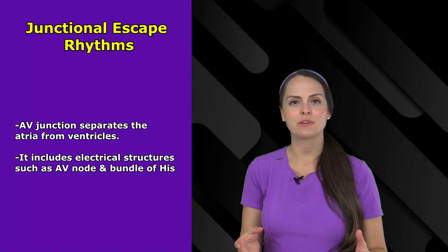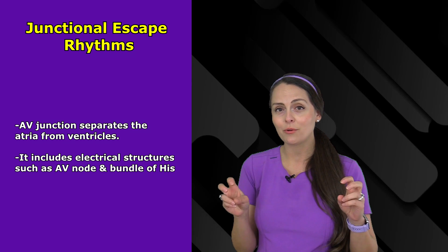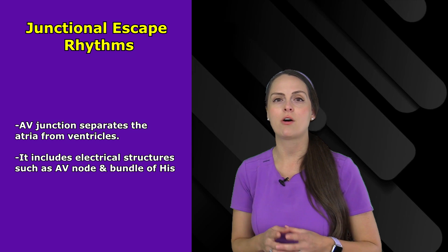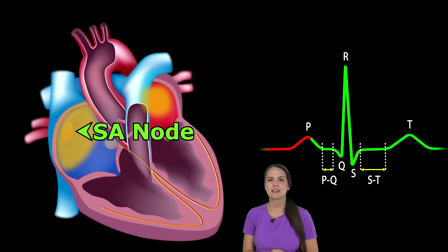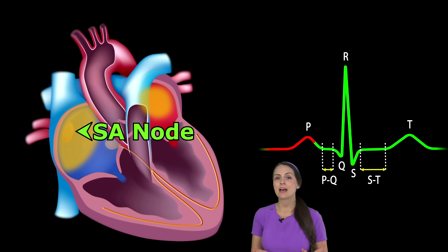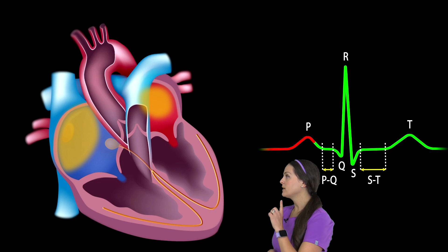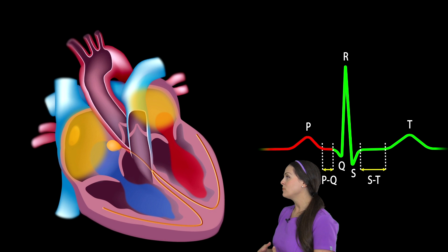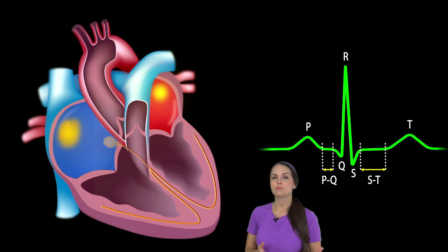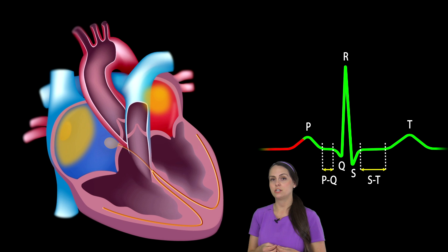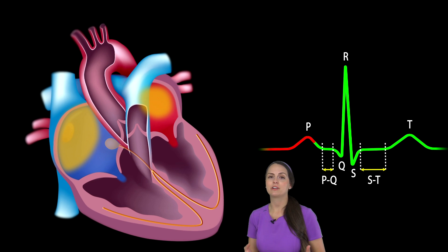To truly understand junctional rhythms, let's quickly review what normal electrical conduction should look like in the heart whenever it creates that PQRST waveform on the ECG. The electrical conduction system starts in the SA node, found in the upper part of the right atrium — the site for the main pacemaker, causing your heart to beat at 60 to 100 beats per minute. When the SA node fires, it sends electrical signals downward throughout the atria, causing atrial depolarization and contraction, which we see as the P wave on the ECG.